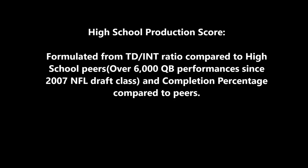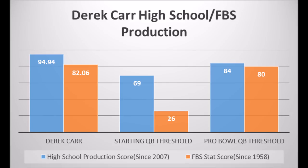The score ranks a player based on how they perform relative to their peers. In Derek Carr's case, his high school production score was a 94.94 out of 100, which is elite. Every single multi-Pro Bowl quarterback drafted since 2007 had at least an 84 or higher, and every starter had at least a 69. Derek Carr met the Pro Bowl threshold easily — he's well above the bare minimum with 94.94 out of 100.